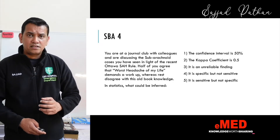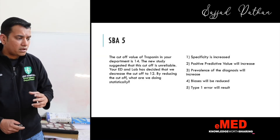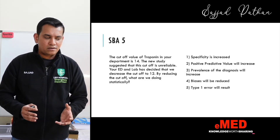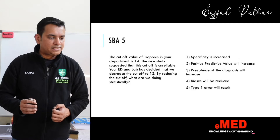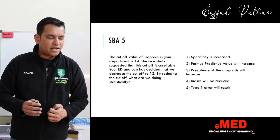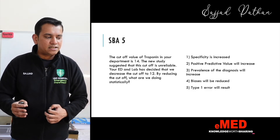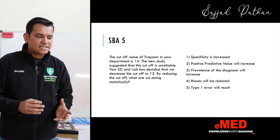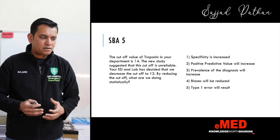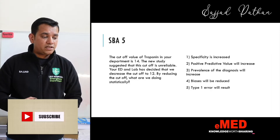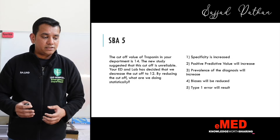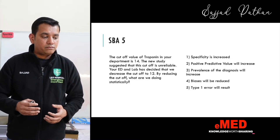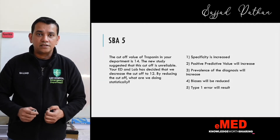Question five: the cutoff value of troponin in your department is 14. A new study suggests this cutoff is unreliable, so your ED lab decides to decrease the cutoff to 12. By reducing the cutoff, what are we doing statistically? Options: specificity is increased, positive predictive value will increase, prevalence of the diagnosis will increase, biases will be reduced, or type 1 error will result.